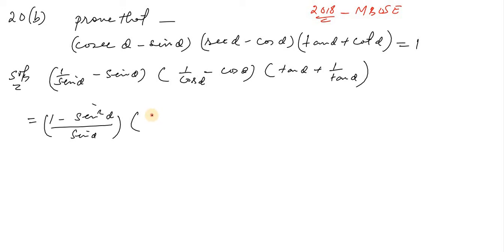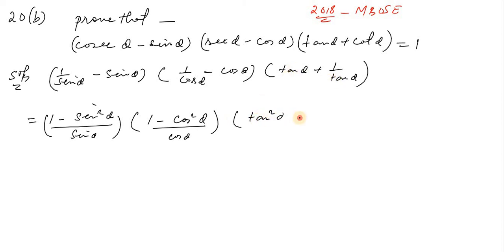One by cos squared theta divided by cos theta — last term: tan to the ten squared plus one. One minus sin squared theta plus one minus sin squared theta plus one.